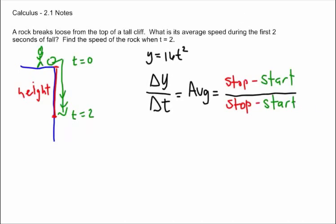So how does this look for our particular problem? Well, our function is 16t squared. So we need to know our stop time is when t equals 2, our start time is when t equals 0. Our time on the bottom, we stop at 2, we start at 0.